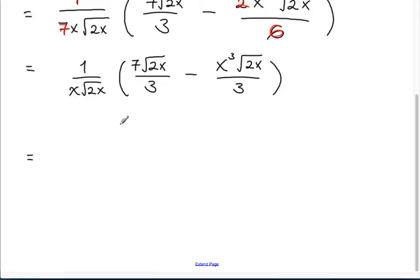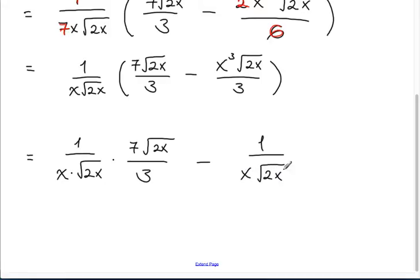All right. So I'm going to distribute 1 over x times root 2x inside the bracket. I'll get 1 over x times root 2x times 7 root 2x over 3 minus 1 over x root 2x times x cubed times root 2x over 3. There. Good.